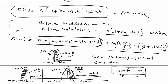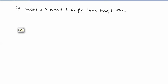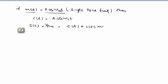We discuss the remaining criteria for single-tone AM modulation. If a single frequency message signal CT equals A cos(ω_M t) is applied on an AM modulator, the generated AM waveform is X_M. The expression for AM is A cos(ω_C t) plus A_M cos(ω_M t) cos(ω_C t).